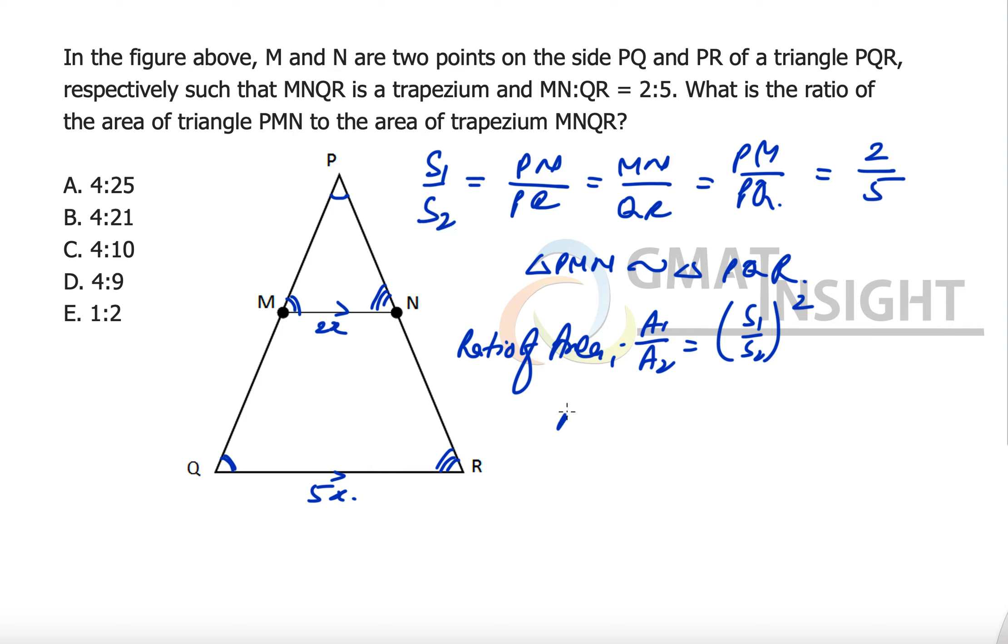So if we have to find out the area of triangle PMN over area of triangle PQR then it should be equal to 2 over 5 whole square that becomes 4 over 25.